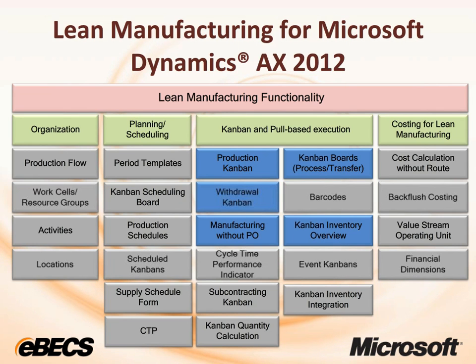Lean manufacturing in AX 2012 has a wide variety of functionality. Today we're going to discuss production Kanban and withdrawal Kanban using fixed-quantity Kanbans. We're going to process these with the Kanban board both for process jobs and transfer jobs. We will take a look at the Kanban inventory overview on the boards, and we'll also be manufacturing without a production order using a production Kanban.